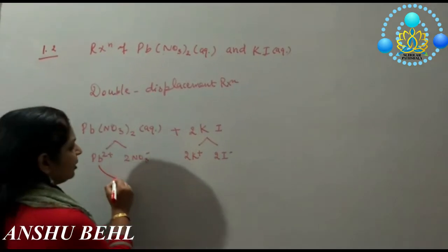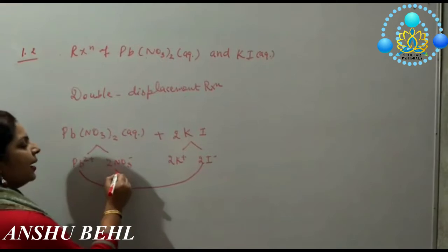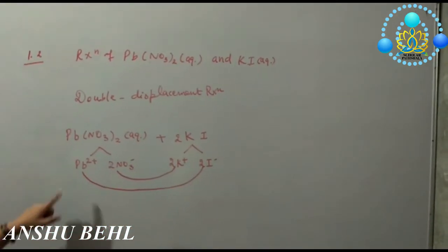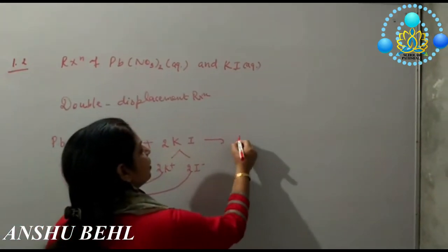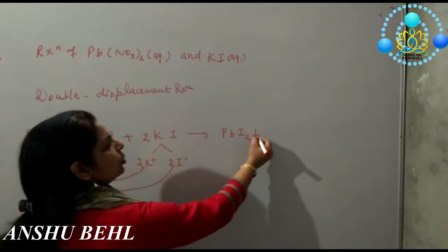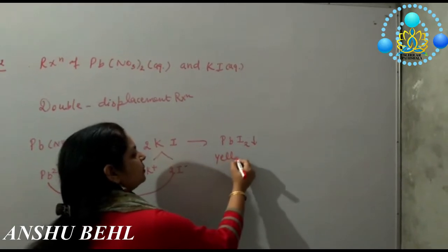So here now cation of first will combine with anion of second, and anion of second will combine with cation of first. So lead combines with iodine to form lead iodide, and it will settle down. This arrow is showing it will settle down as yellow precipitates.